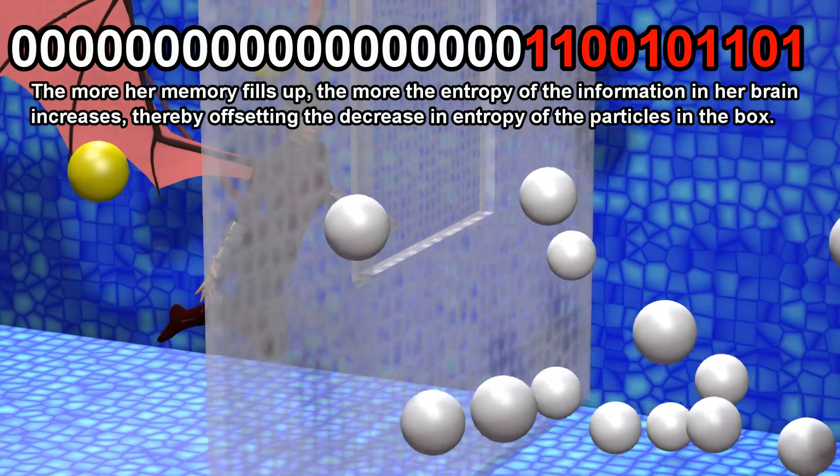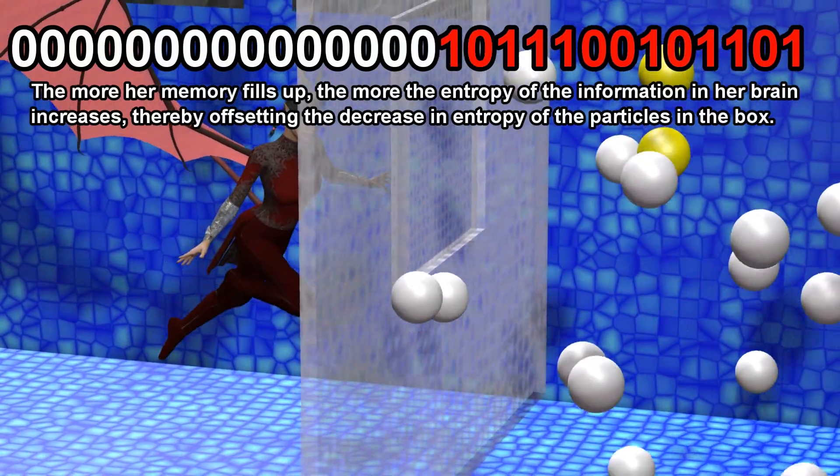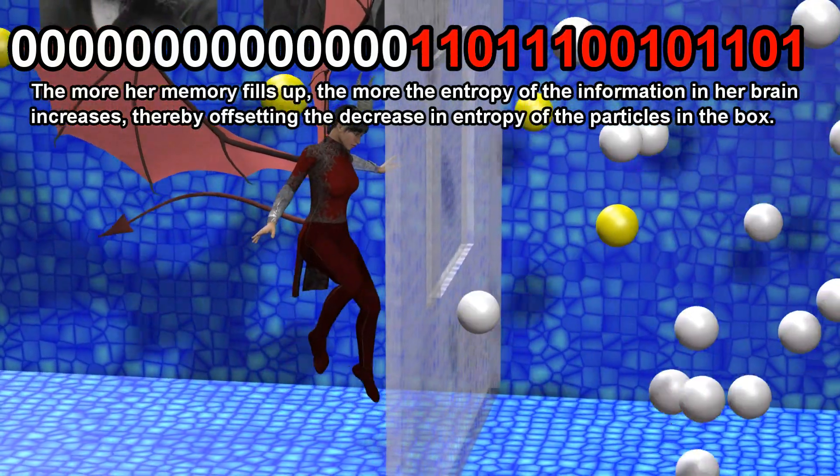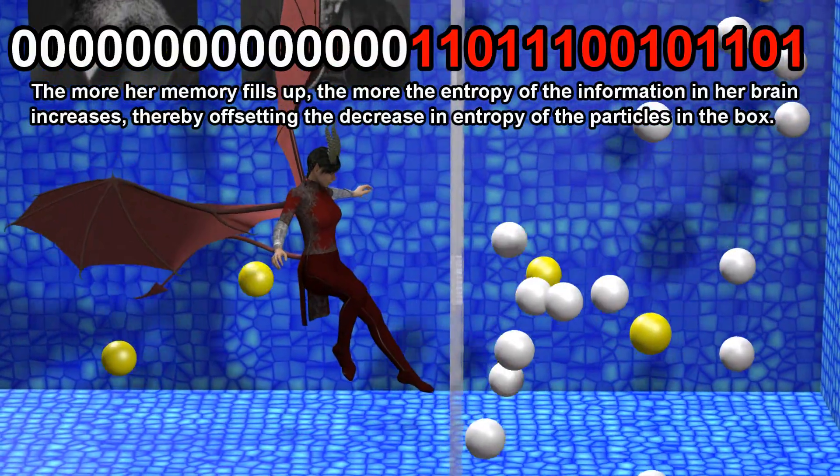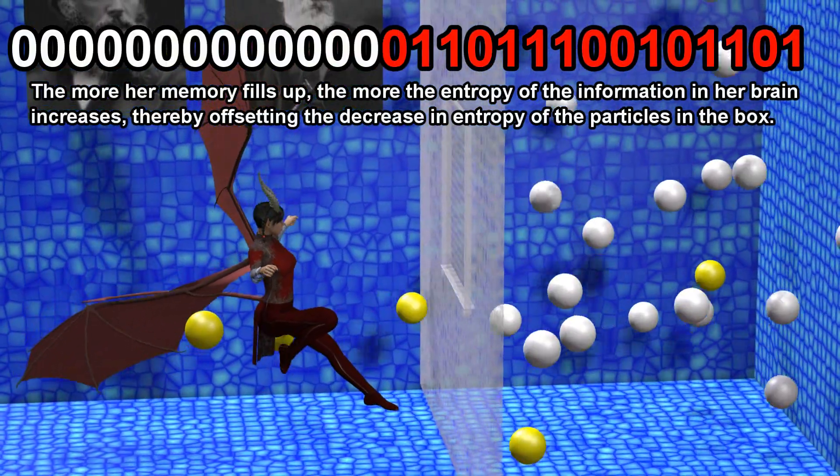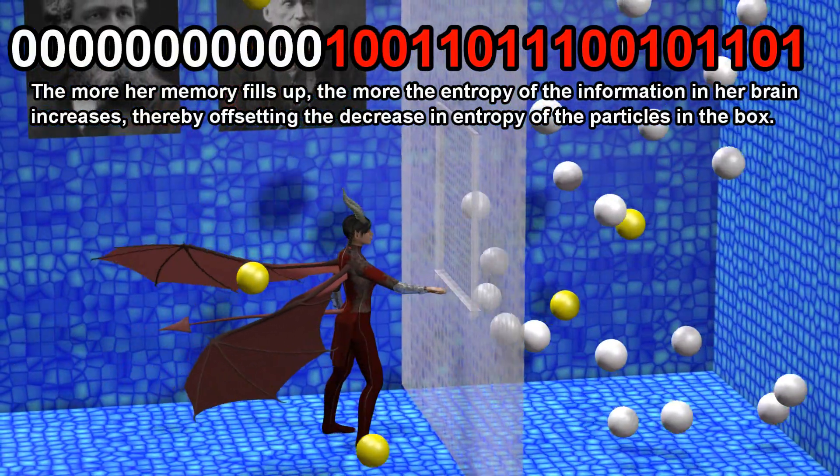The more her memory fills up, the more the entropy of the information in her brain increases, thereby offsetting the decrease in entropy of the particles in the box.